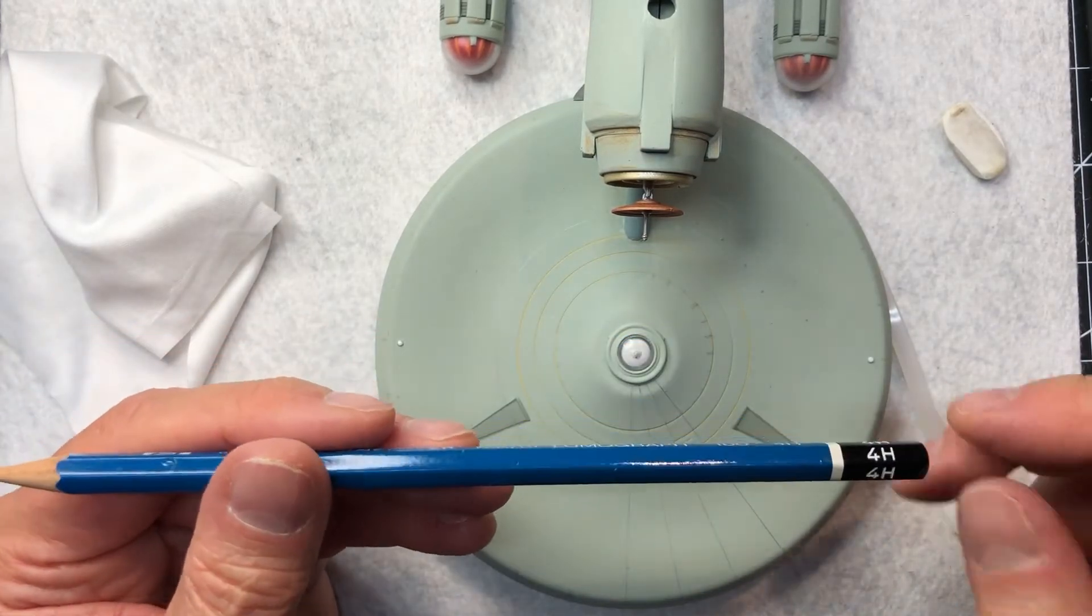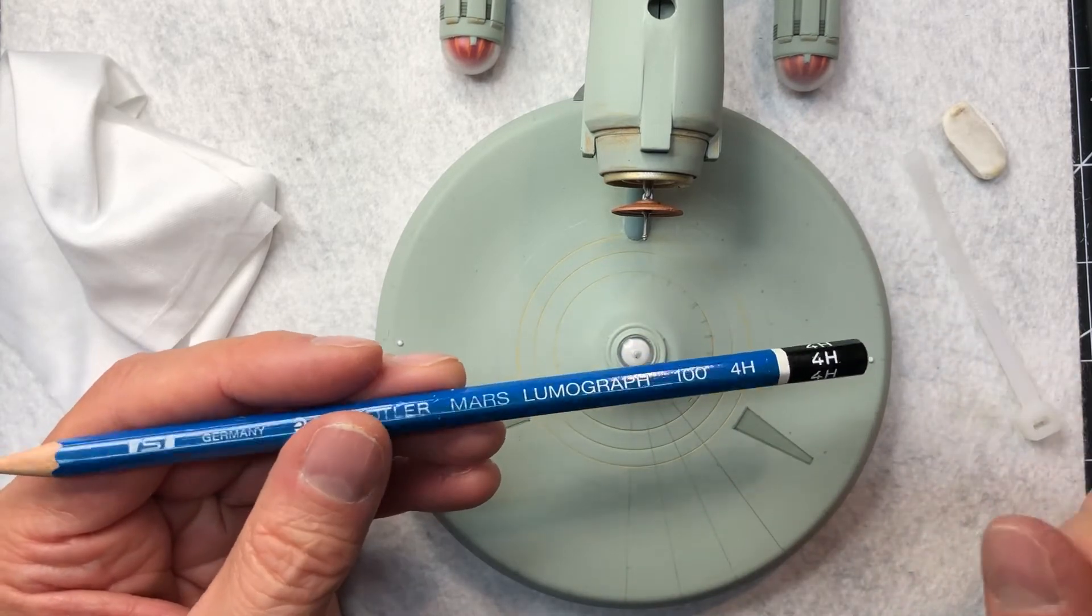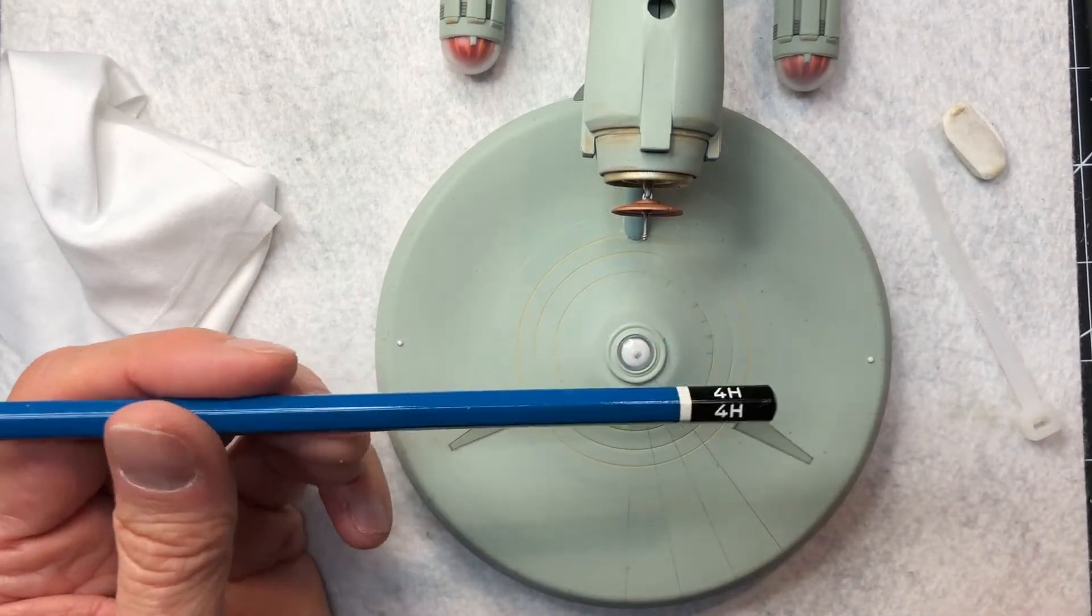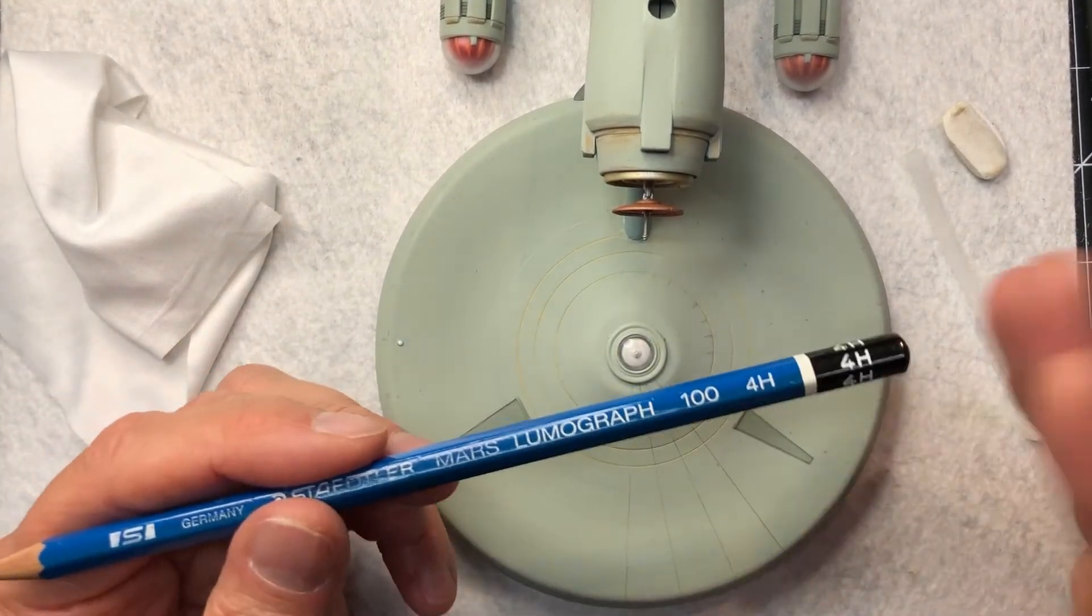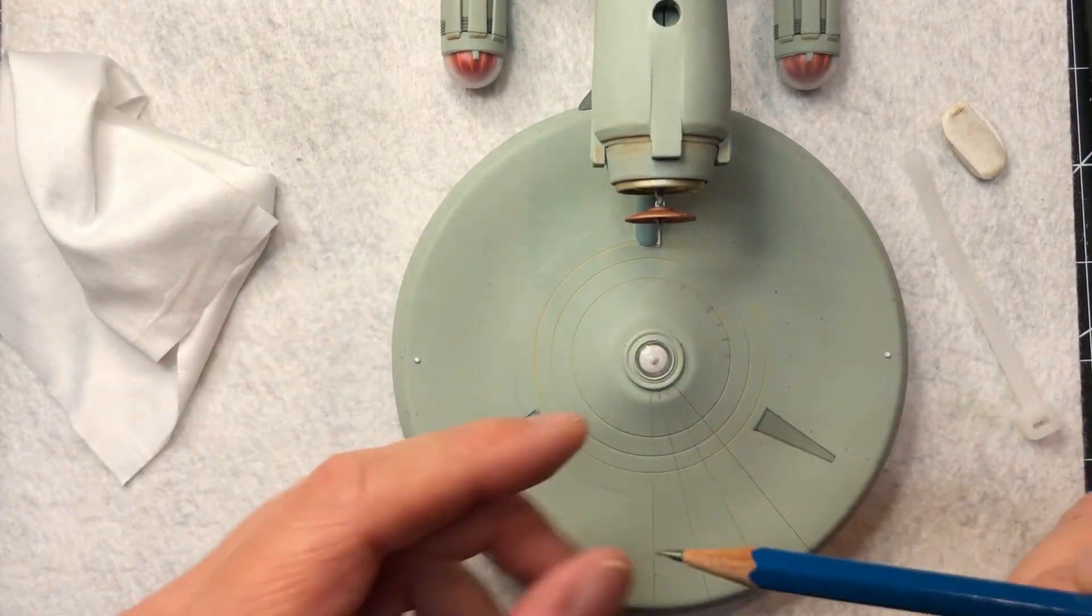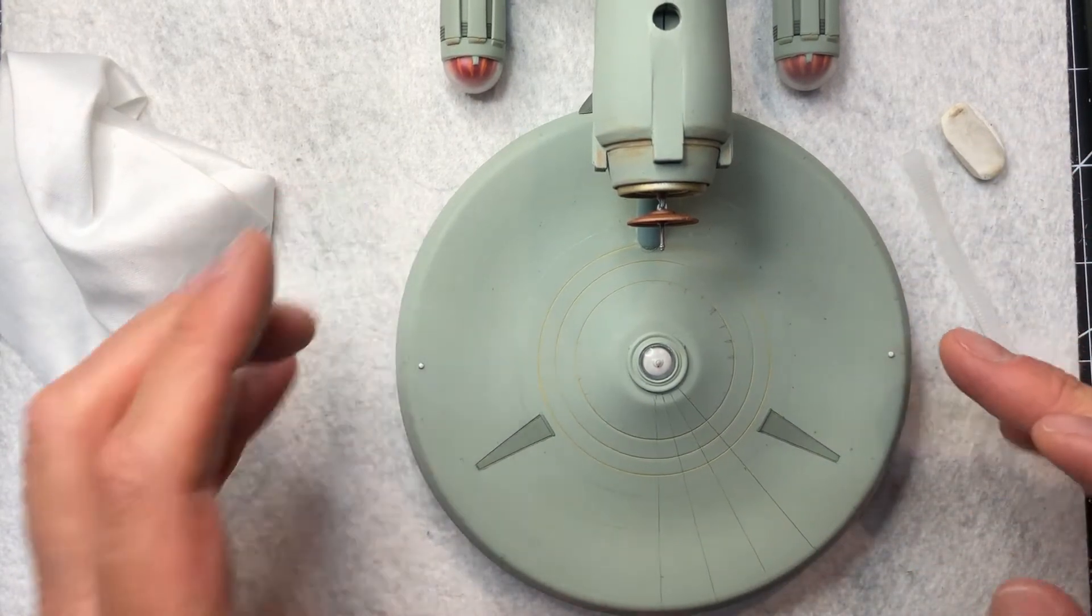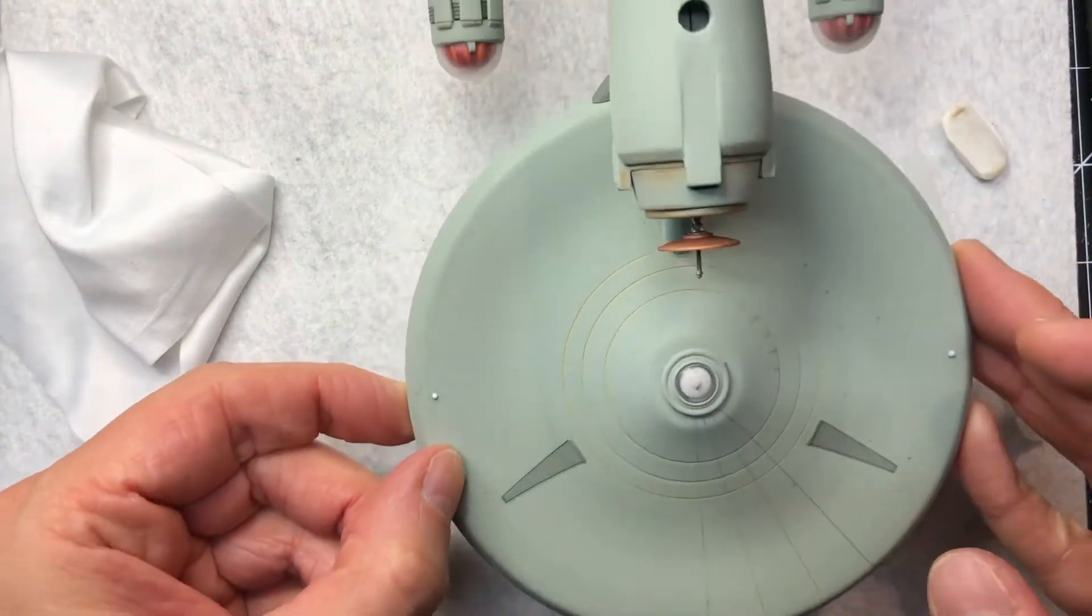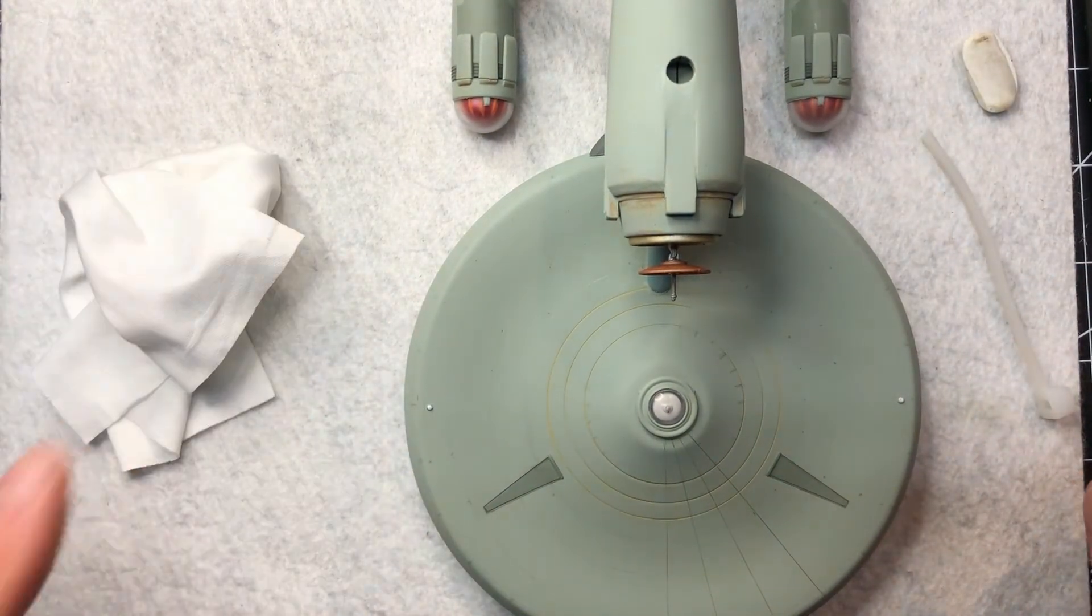I understand when the very original model was built, they actually used a 2B, but it's a much bigger model of course. And so if we were to go that soft of a pencil, it's going to be way too dark for this scale. So that's why I'm using 4-H here. And the thing with 4-H, it's really nice, is it's a really hard lead. So it actually kind of almost engraves a little bit. And that's why you get this kind of nice effect. I can erase it, but it's still on certain lights you see it. And that's really, I feel pretty accurate to how those grid lines look on that original Enterprise.